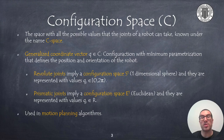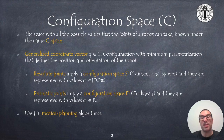Revolute joints imply a configuration space of S1 and are represented with values between 0 and 2π, although some joints might have physical limits and the range might be smaller. On the other hand, prismatic joints imply a configuration space of R1 and therefore can take real values, but also they might have physical limits and the range might be smaller. The robot configuration space is widely used in motion planning problems, mainly because the robot can be treated as a simple point defined by the generalized coordinate vector Q.